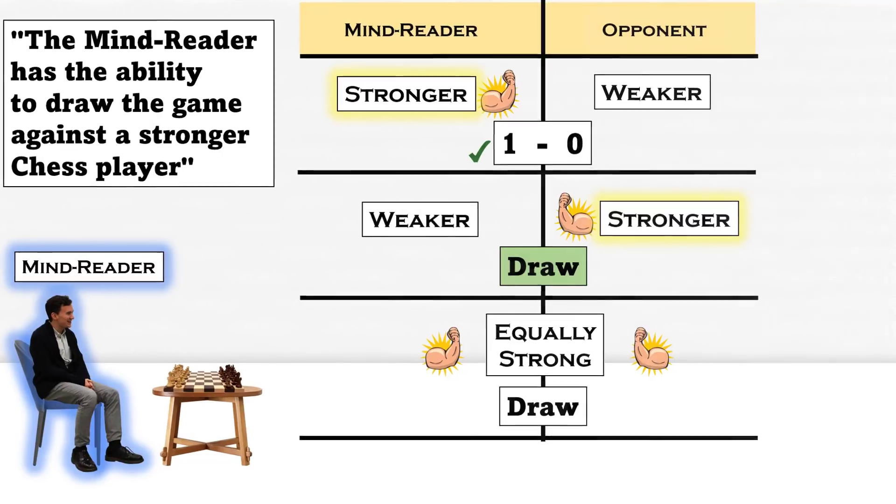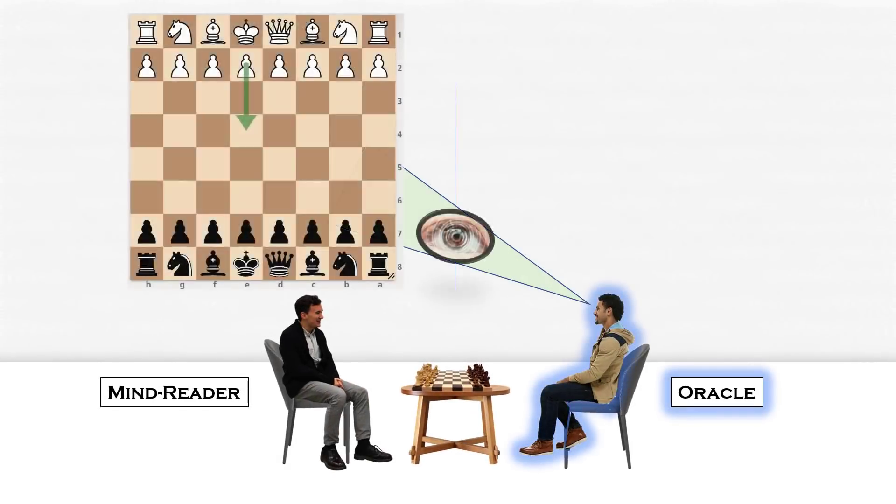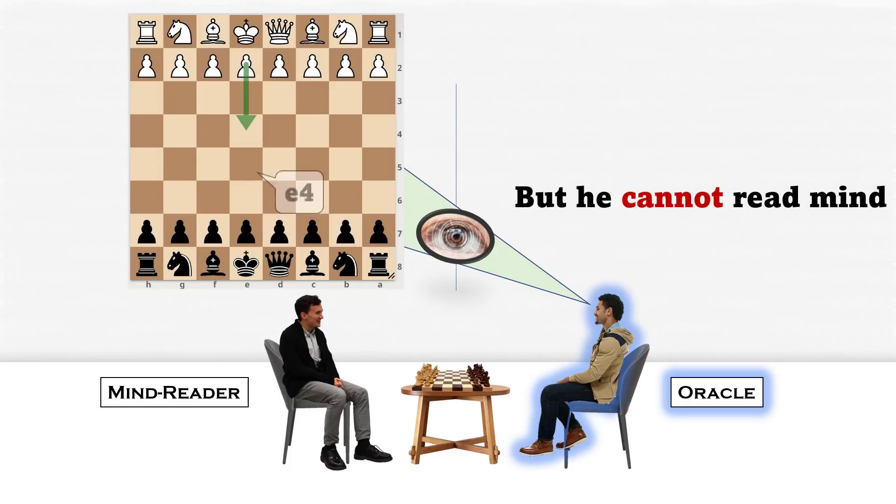Now let's think from the perspective of the Oracle. The Oracle can see the future, but he cannot read the mind. For instance, the Oracle sees the future that his opponent is going to play the move E4. Since that is the future, his opponent will certainly play the move E4.